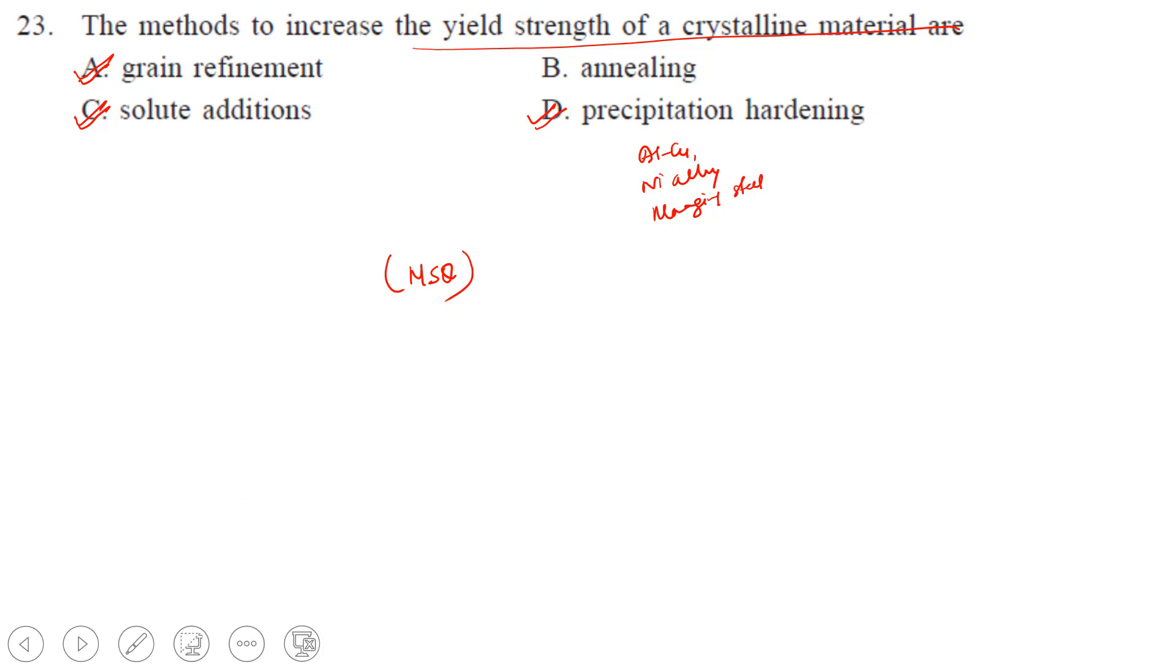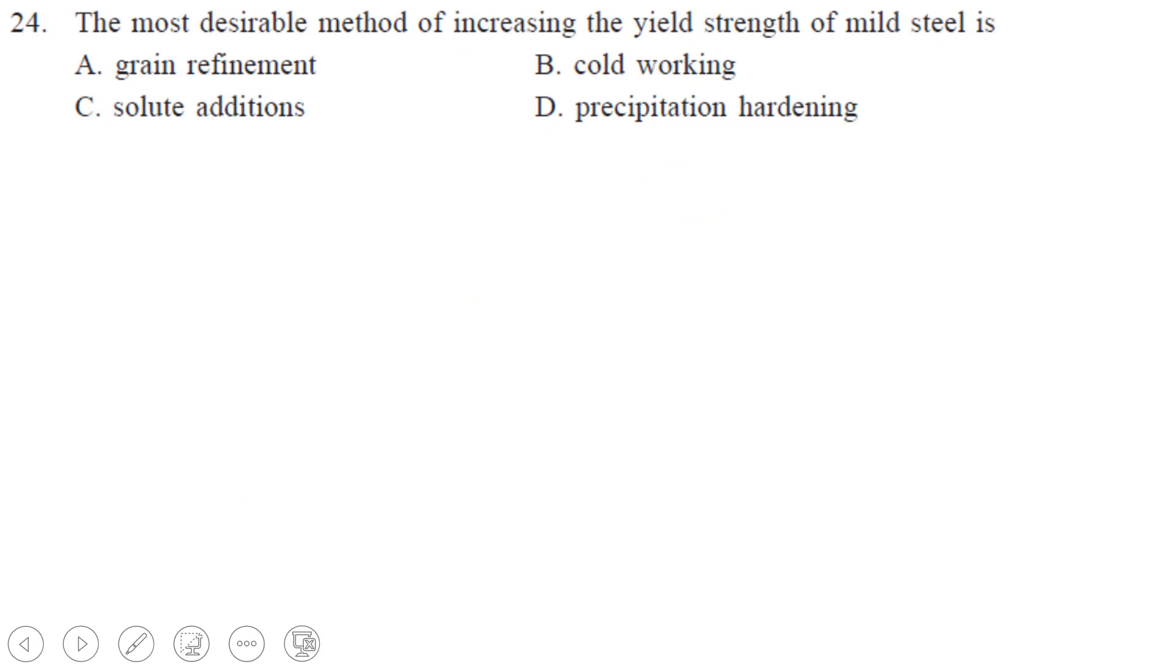Next, the most desirable method of increasing the yield strength of mild steel is what? Mild steel means carbon content will be low. Grain refinement, yes, it is one of the best methods. Cold working is the second one.